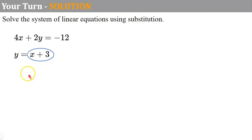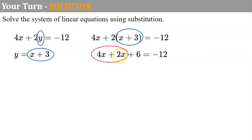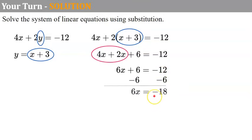Welcome back. Our first step is not necessary because this equation is already solved for y. So we're going to take that expression and replace y in the first equation with x plus 3. So we have 4x plus 2 times y, which equals x plus 3. We distribute: 2 times x is 2x, and 2 times 3 is 6. Combining like terms, 4x and 2x are 6x. We subtract 6 from each side, giving us 6x equals negative 18. Dividing both sides by 6, x equals negative 3.